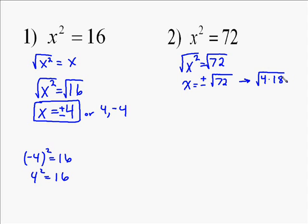And then we look to see if 4 goes into 18, which it doesn't, but 9 does go into 18. 4 and 9 are perfect squares, that's why we're factoring those out.